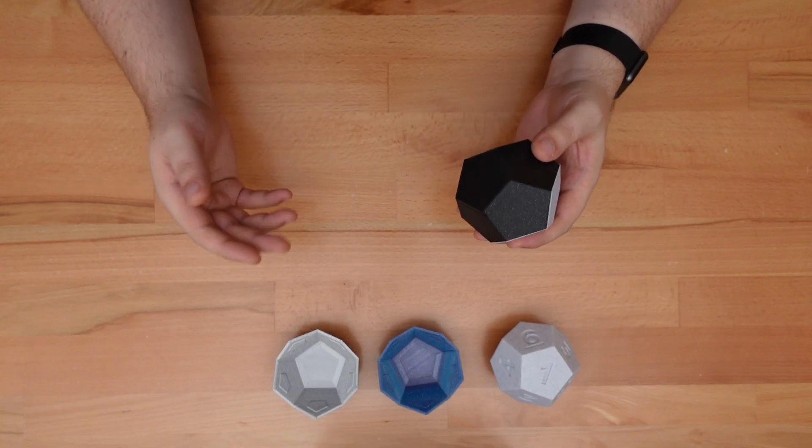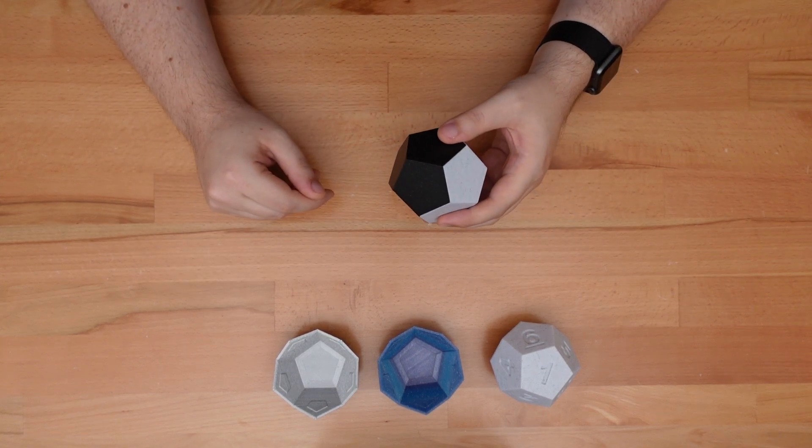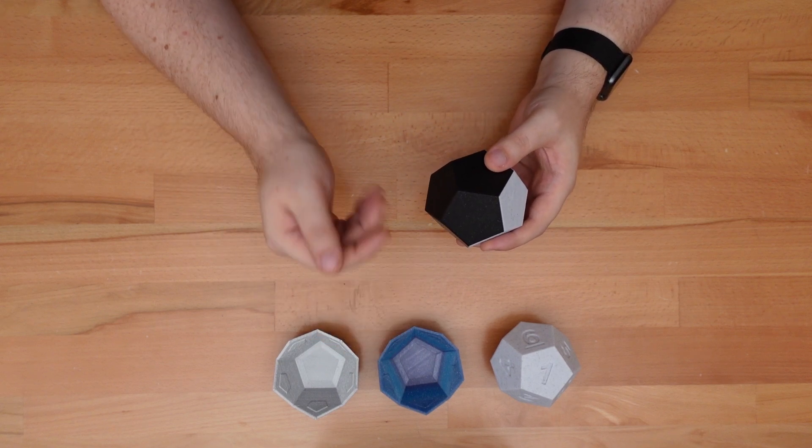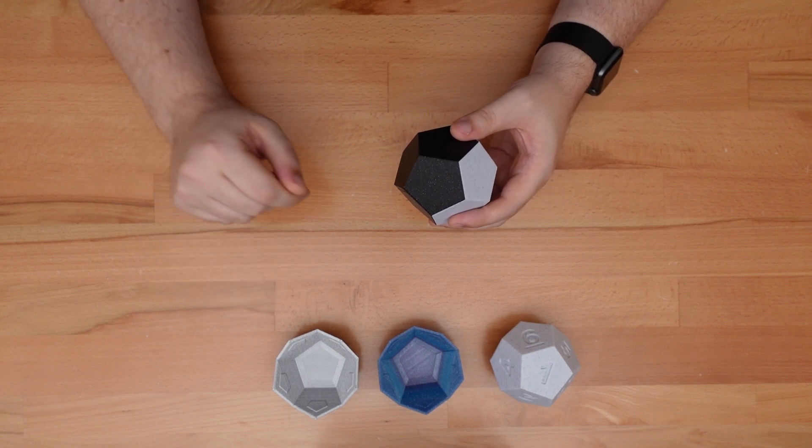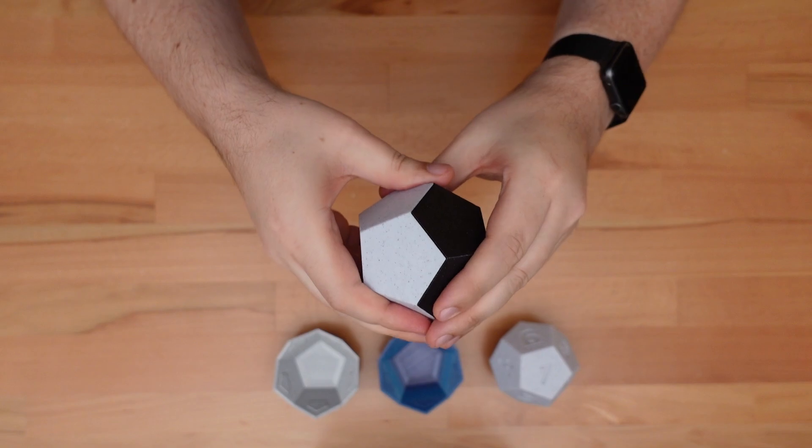The lid comes in three different clearances: loose, tight, and impossibly tight. Results will vary depending on your printer. But for me, the loose lid falls right off, the tight lid requires some actual effort, and the impossibly tight lid won't come off without tools.